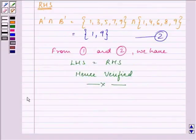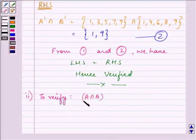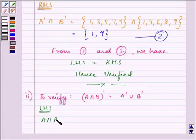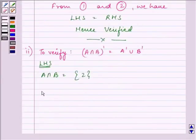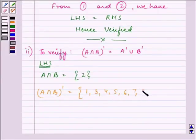Now the second part says: verify (A∩B)' is equal to A'∪B'. Let us find out the left hand side, A∩B. Which elements are common to both A and B? That is only one element, that is 2. So (A∩B)' will have all the elements other than 2: {1, 3, 4, 5, 6, 7, 8, 9}. Let this be the first result.